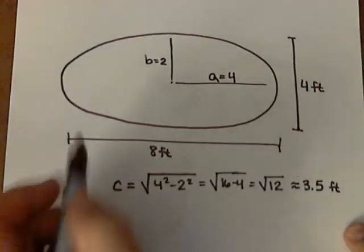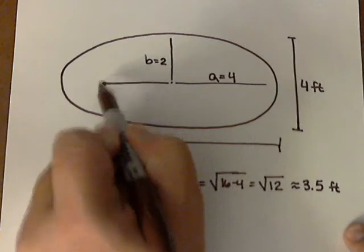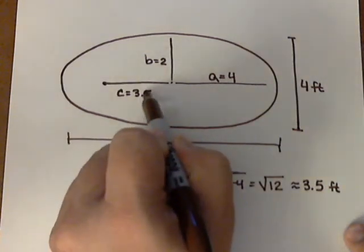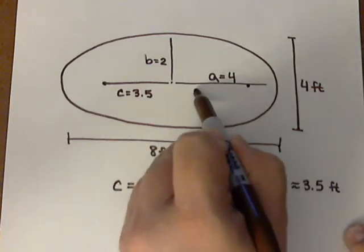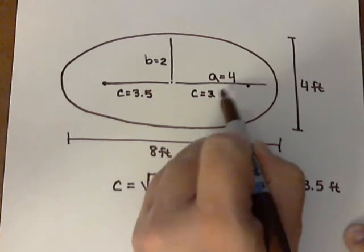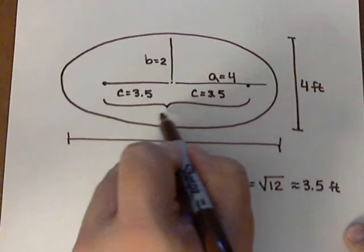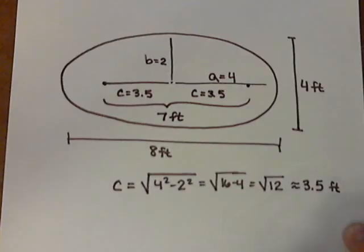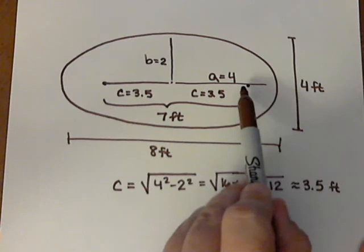So, what that tells us is that our c value, the distance from the center to the focus point, needs to be about 3.5 feet. Also, we would measure it 3.5 feet the other way. So, that tells me from focus to focus would be a total of 7 feet. So, that means we need to place our focus points 7 feet apart on the wood.